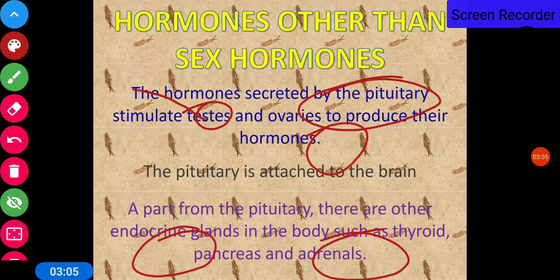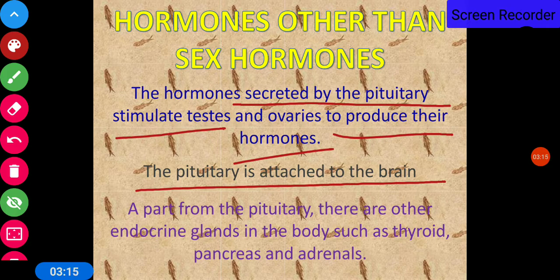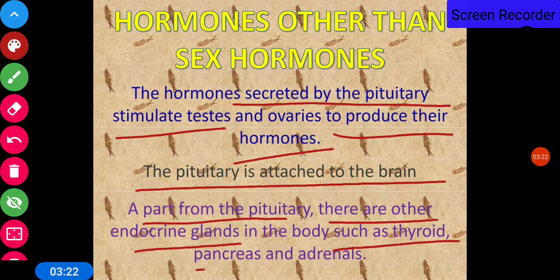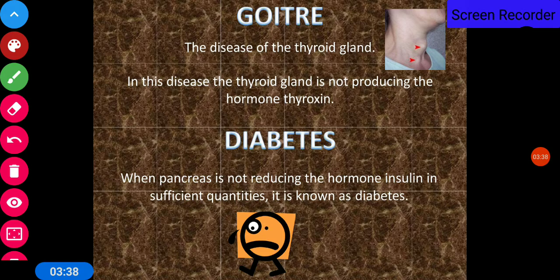Hormones other than sex hormones: the hormones secreted by the pituitary stimulate the testes and ovaries to produce their hormones. The pituitary is attached to the brain. Apart from the pituitary, there are other endocrine glands in the body such as the thyroid, pancreas, and adrenal glands.